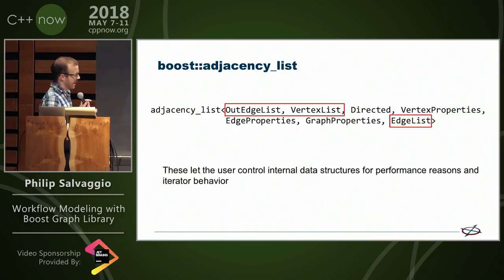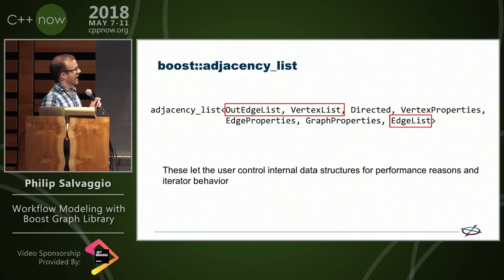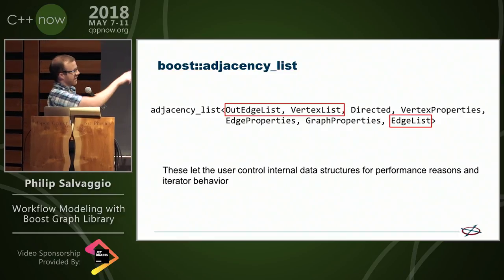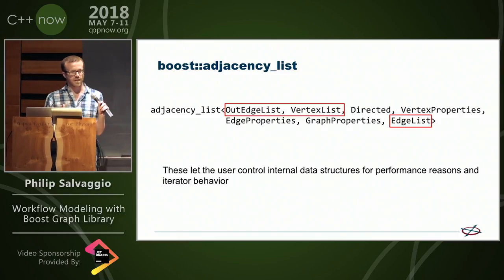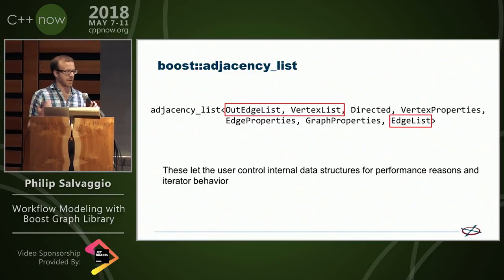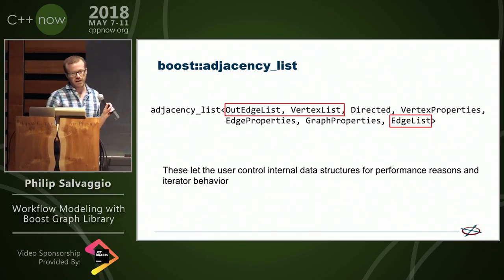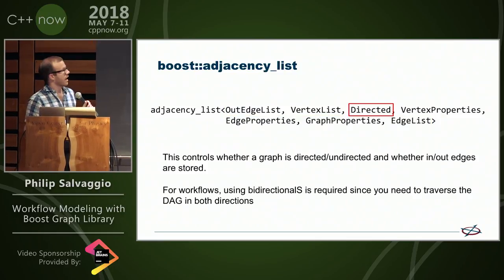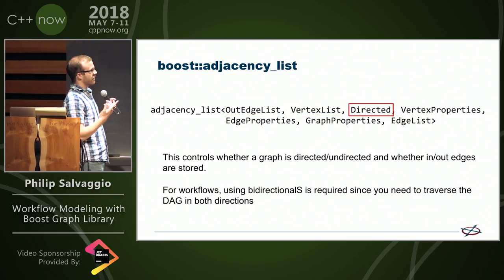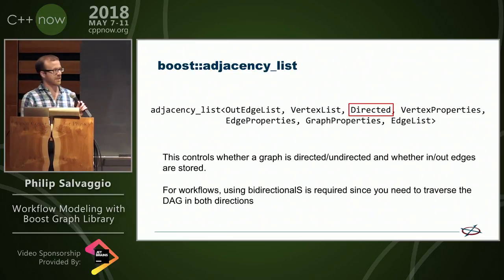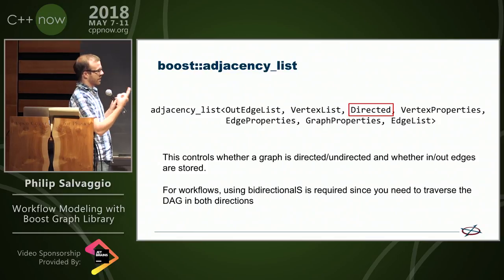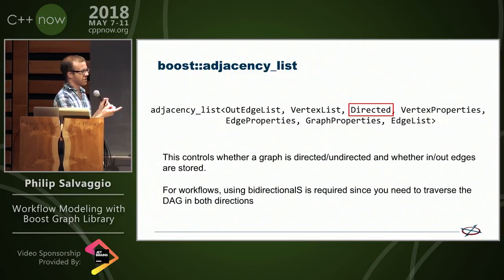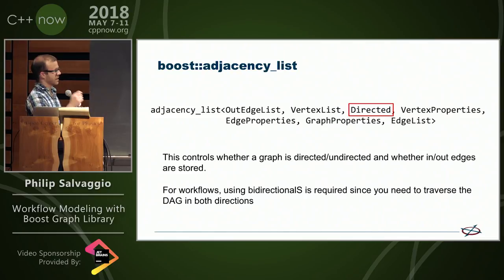We use Boost Graph Library for doing that modeling. Boost Graph Library has a bunch of different ways to model graphs. The one we use is adjacency list, and it gives you all these template parameters for customization. The three highlighted here let you control the data structures it uses, for performance reasons and how you want your iterators to behave. This one controls how directed your graph is — whether it's directed, undirected, or bidirectional, which is what we use, because you need to traverse the DAG — the directed acyclic graph — in both directions. So for any job, you need to know what it depends on and what depends on it.